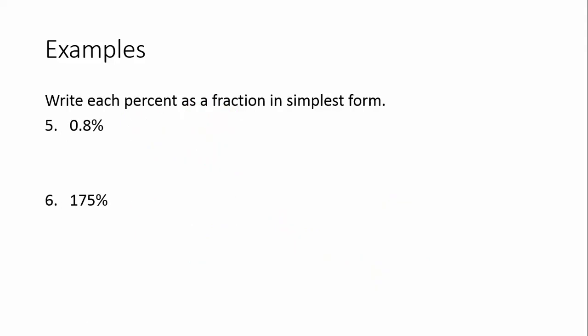Let's keep going. Again, write each percent as a fraction, simplest form. And now we're looking at numbers that are less than 1 or greater than 100. But still the process is the same. So if we have 0.8 percent, we're going to write 0.8 out of 100.